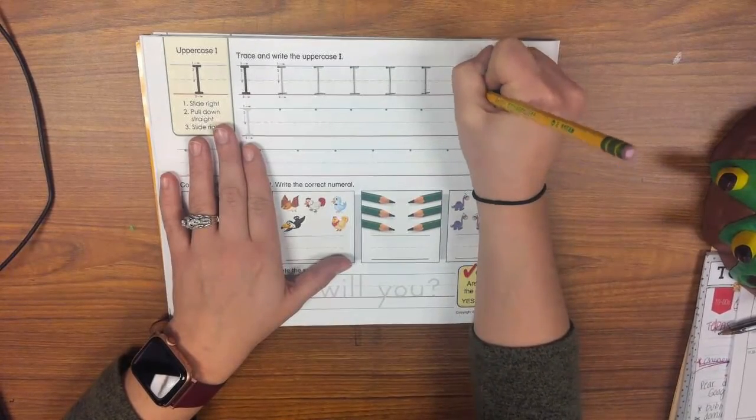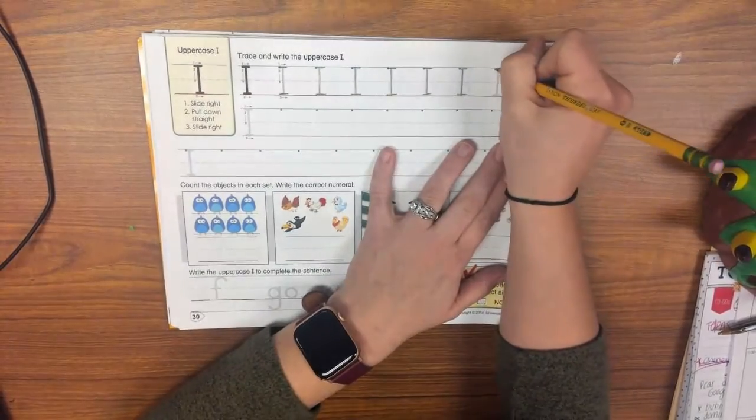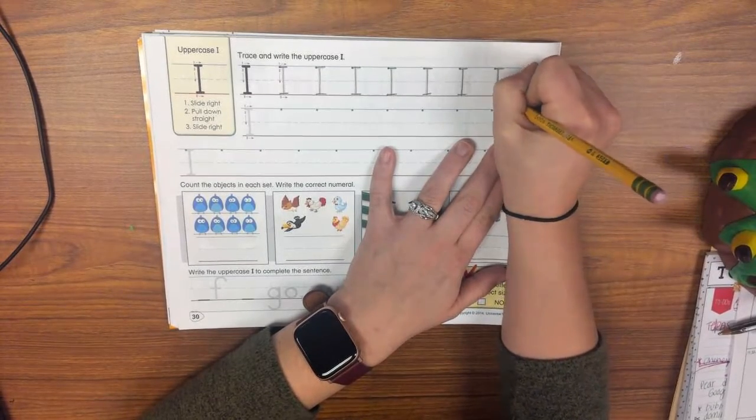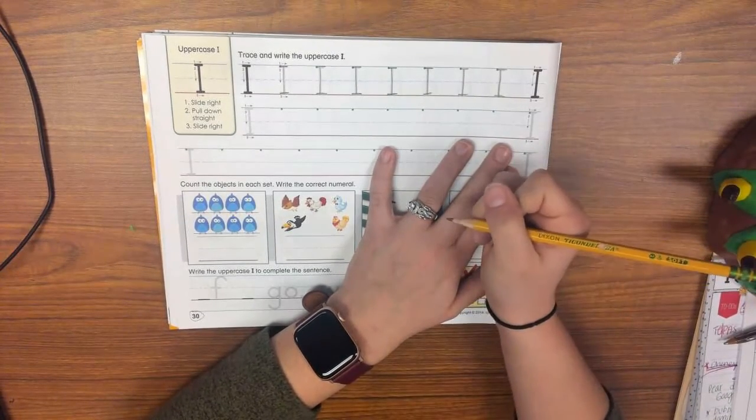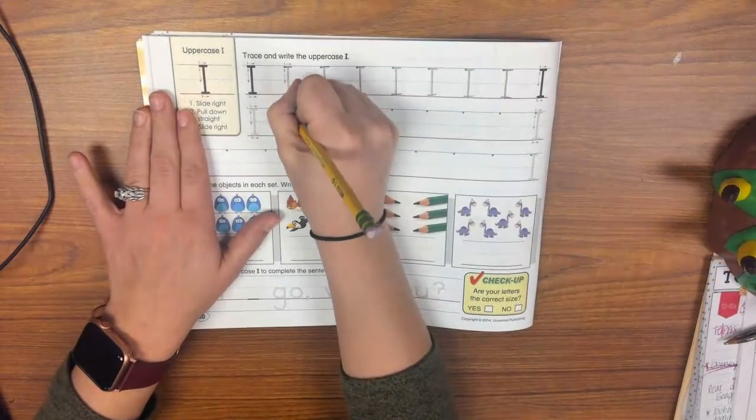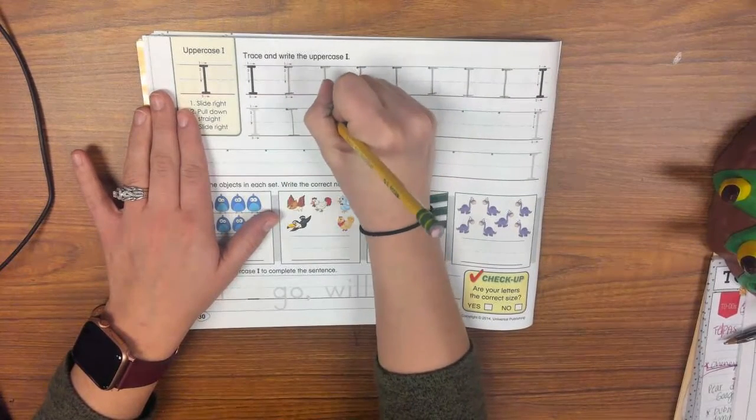We always, always make sure to capitalize I when we're talking about ourselves and when it's at the beginning of a sentence. Capital I is an important one. You're going to keep doing that all the way down here. Everywhere that there's a green dot, there needs to be an uppercase I, every single way.